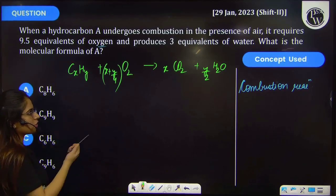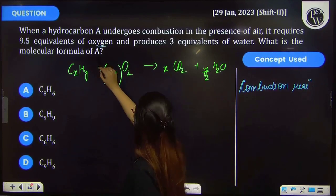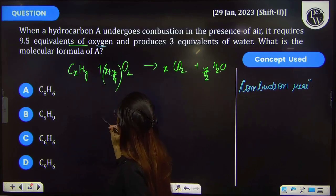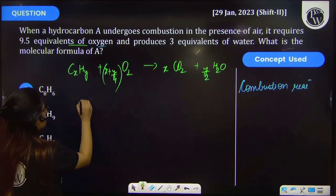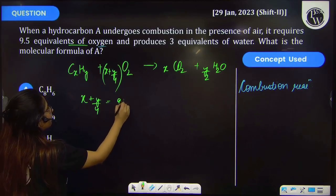So on the basis of this, let's calculate the molecular formula of the compound. We have been provided with 9.5 equivalents of oxygen. That means x plus y by 4 is equal to 9.5.